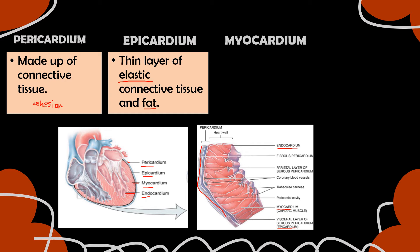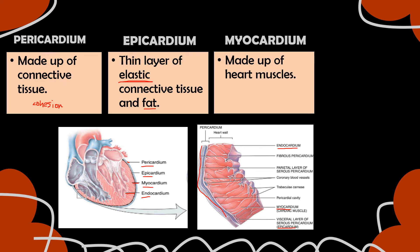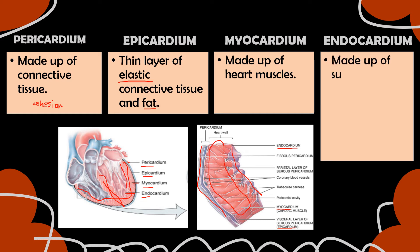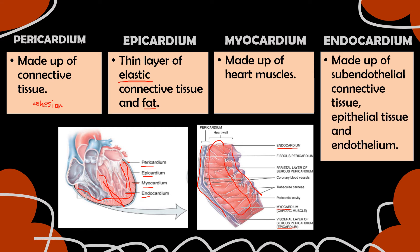Myocardium is made up of heart muscles — it is full of heart muscles. Endocardium, the innermost layer, is made up of subendothelial connective tissue, epithelial tissue, and endothelium. This subendothelial connective tissue helps in delivering blood to all the tissues in a directed and regulated manner, not in an irregular manner.